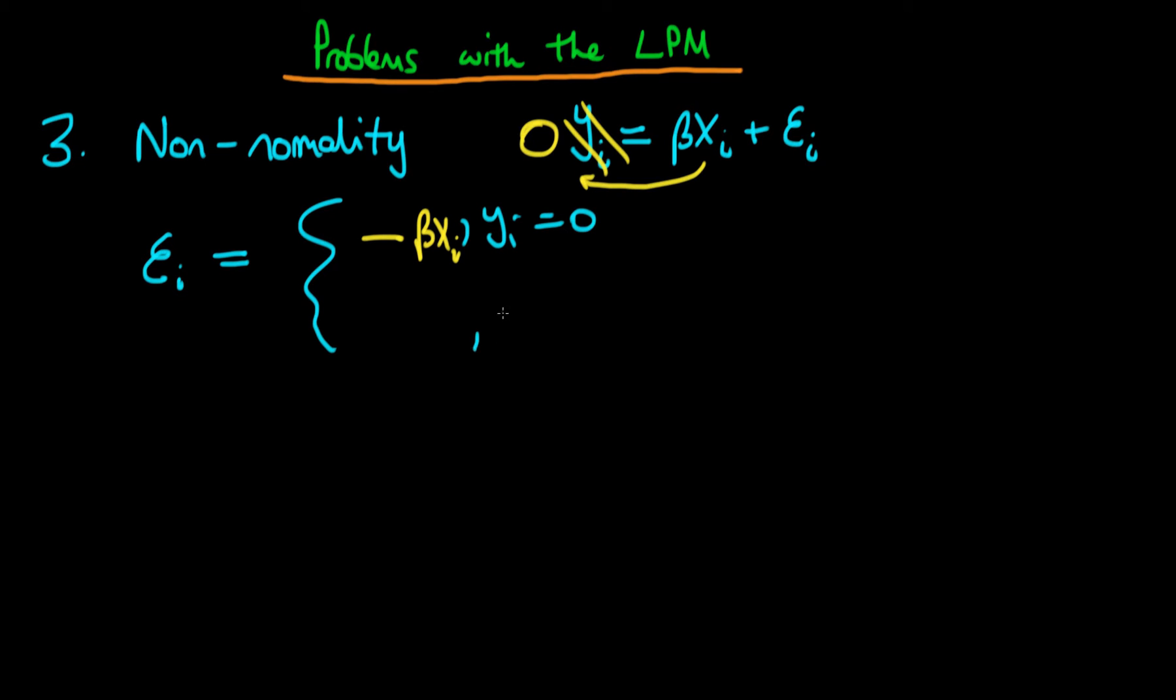And when yi is equal to 1, then we can just replace this left hand side by a 1, so we get 1 equals beta xi plus epsilon i. When we take the beta xi over to the other side, we're just left with 1 minus beta xi for the epsilon i term.